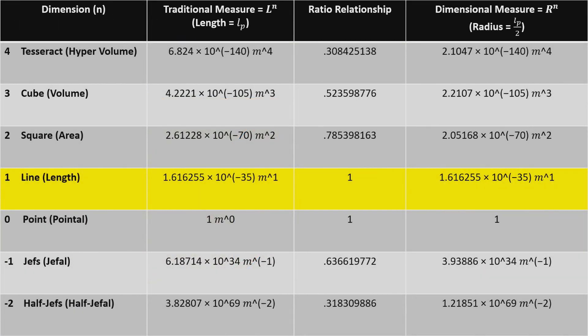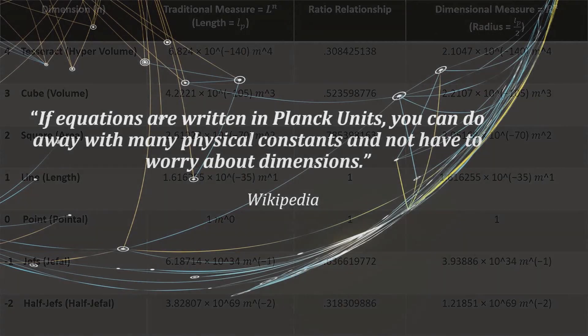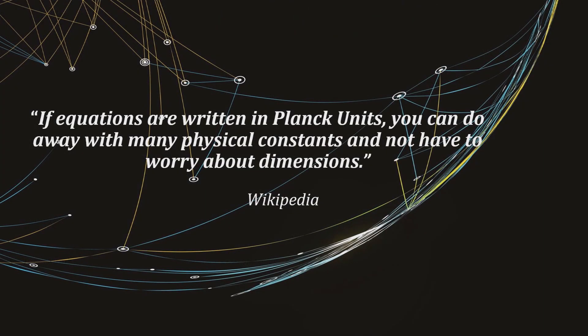That Wikipedia's statement may have to be changed, since we can show that using half the Planck length as a radius in our formula for dimensional measurement produces exactly the same length in dimension one for traditional measurement. As for the other dimensions, all the ratio relationships remain intact with the traditional or dimensional measurements simply being different sizes and shapes. It appears that you can use a smaller length than the Planck length as a radius with no ill effect. Or, it may mean that a radius is not length at all, but something else, since it appears to straddle dimensions.